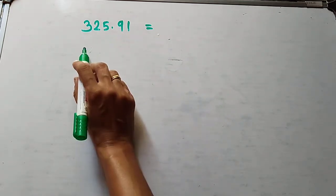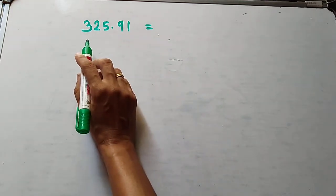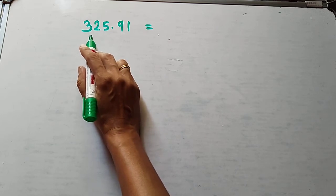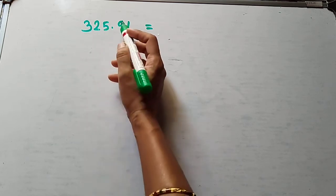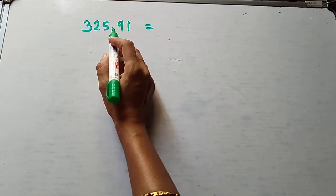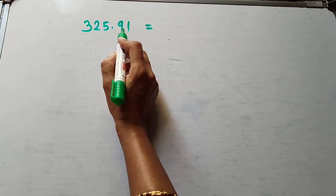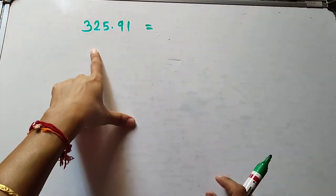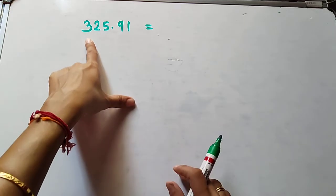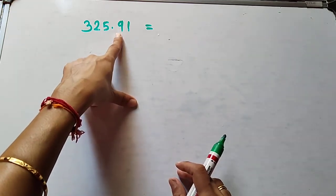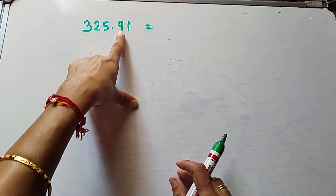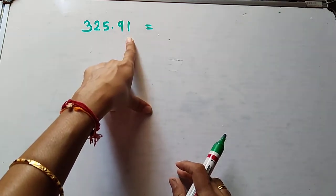See here. This is your number. What is your number? Number 325.91. All digits before the decimal we write as they are. After the decimal point, we read the digits as 9 and 1, not ninety-one. Okay, remember this.